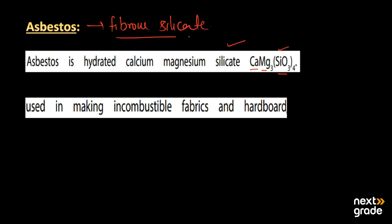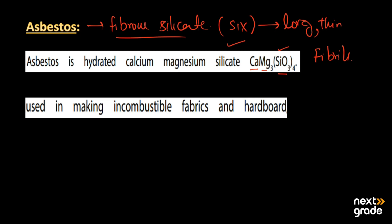Asbestos is a naturally occurring compound and has mainly six types, all of which are generally made up of long and thin fibrous crystals. They are therefore also known as fibrous silicates.